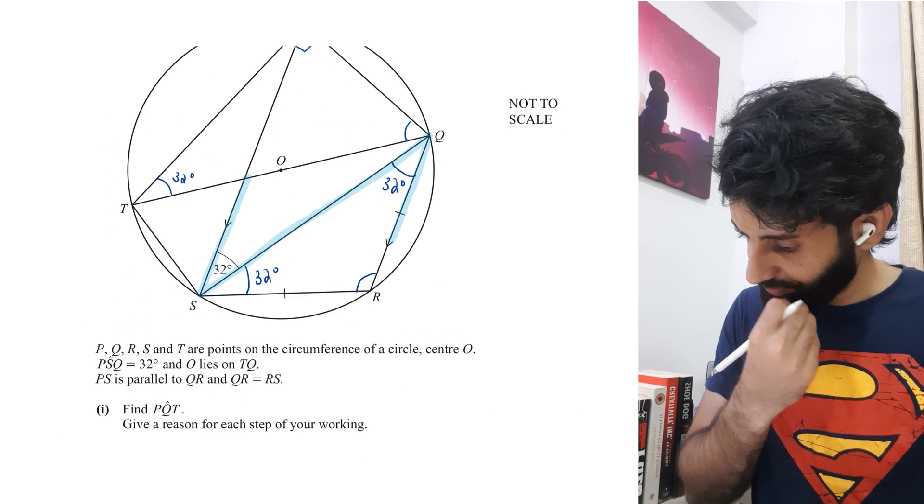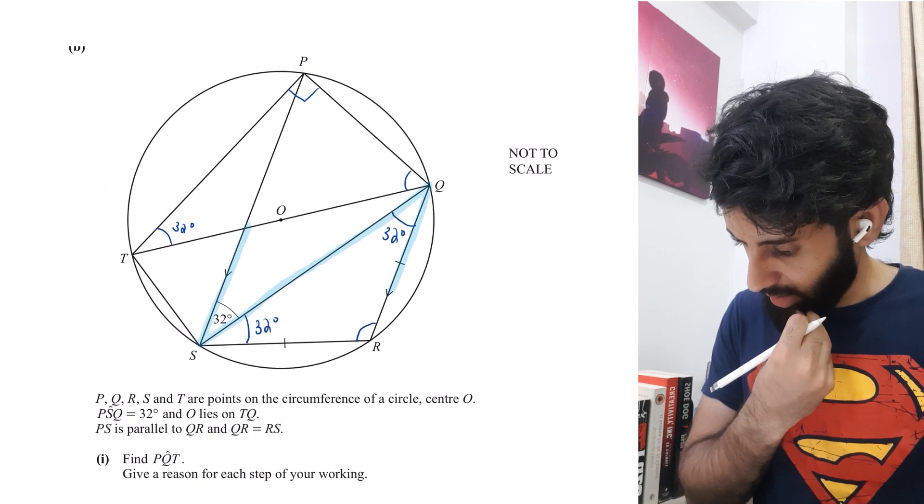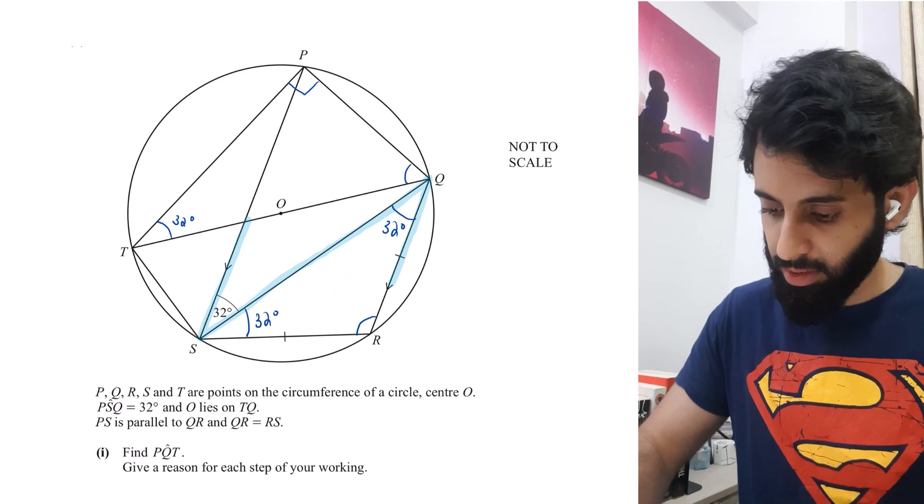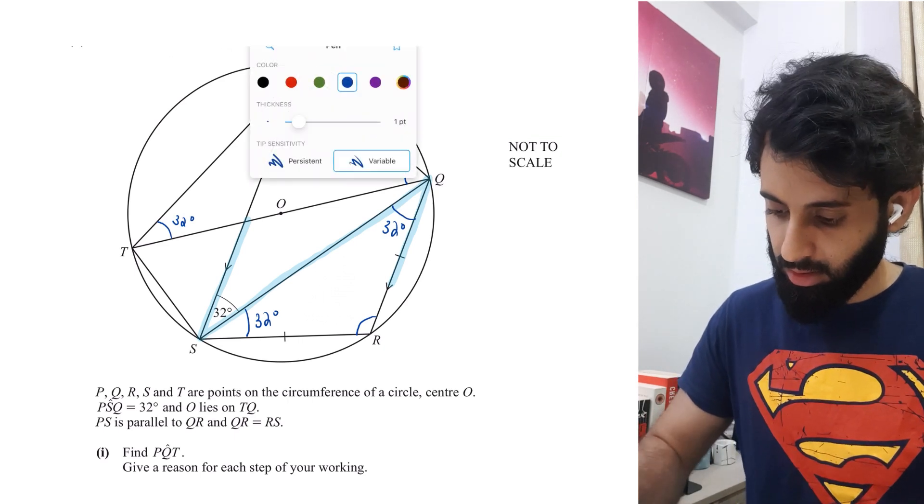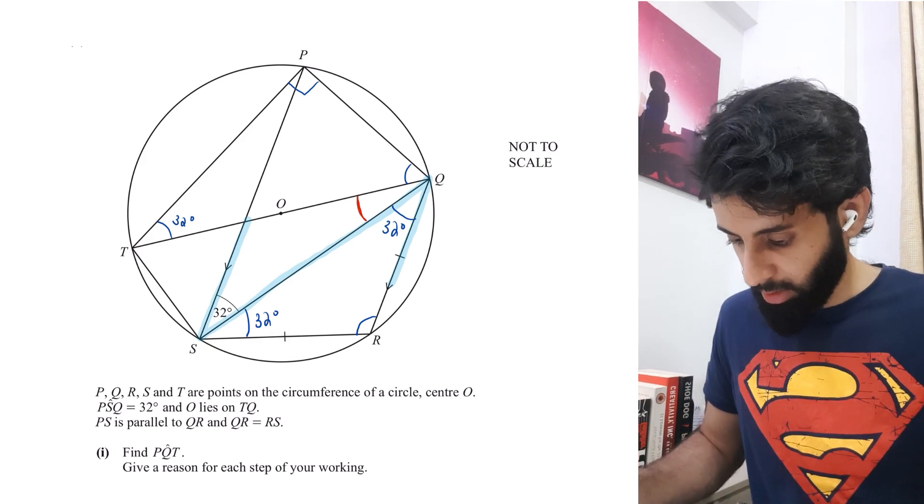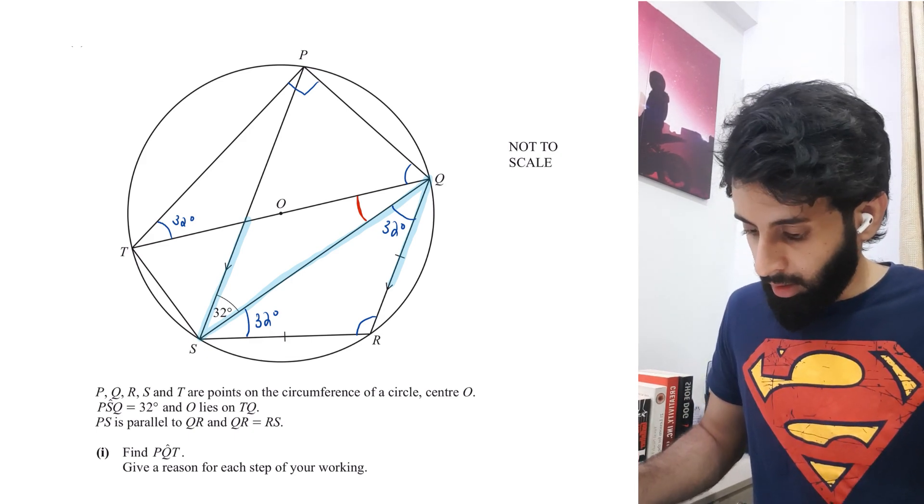Then you have TQS. Let's see - where is T? There. Where is Q? There. And S. So we're talking about this angle TQS. Let's see what we can do here.